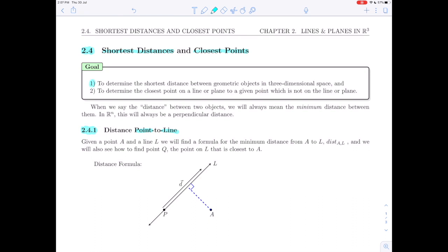So let's look at the goals for this section first of all, and the first of them is to determine the shortest distance between geometric objects in three-dimensional space, and the second is to determine the closest point on a line or a plane to a given point which is not on that line or plane.